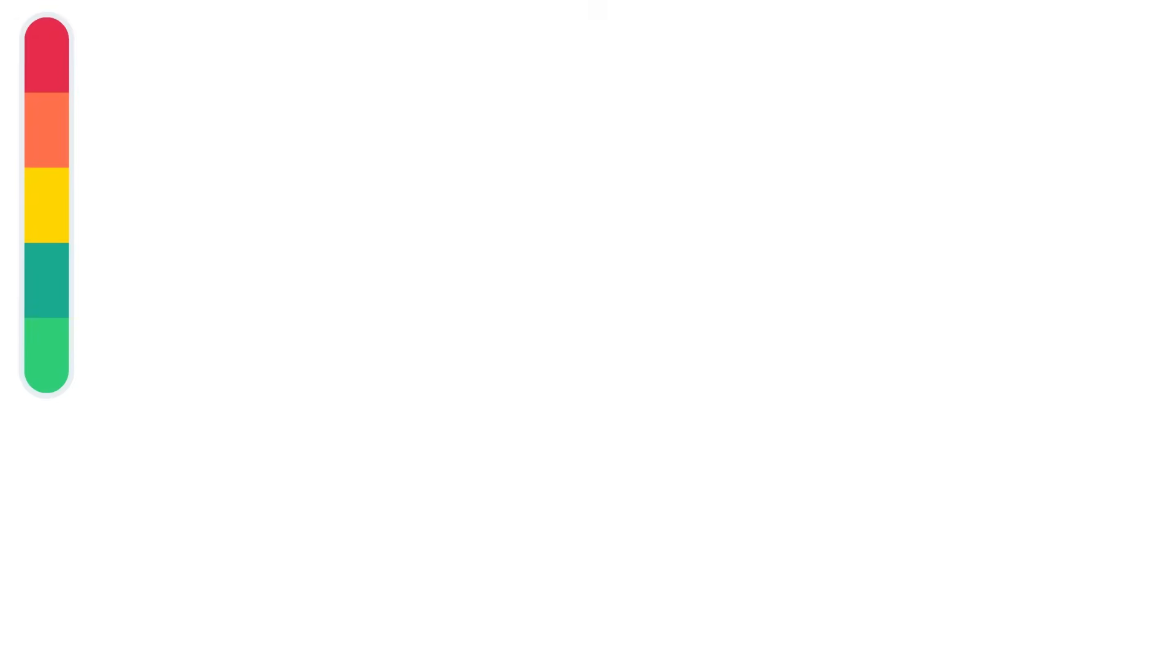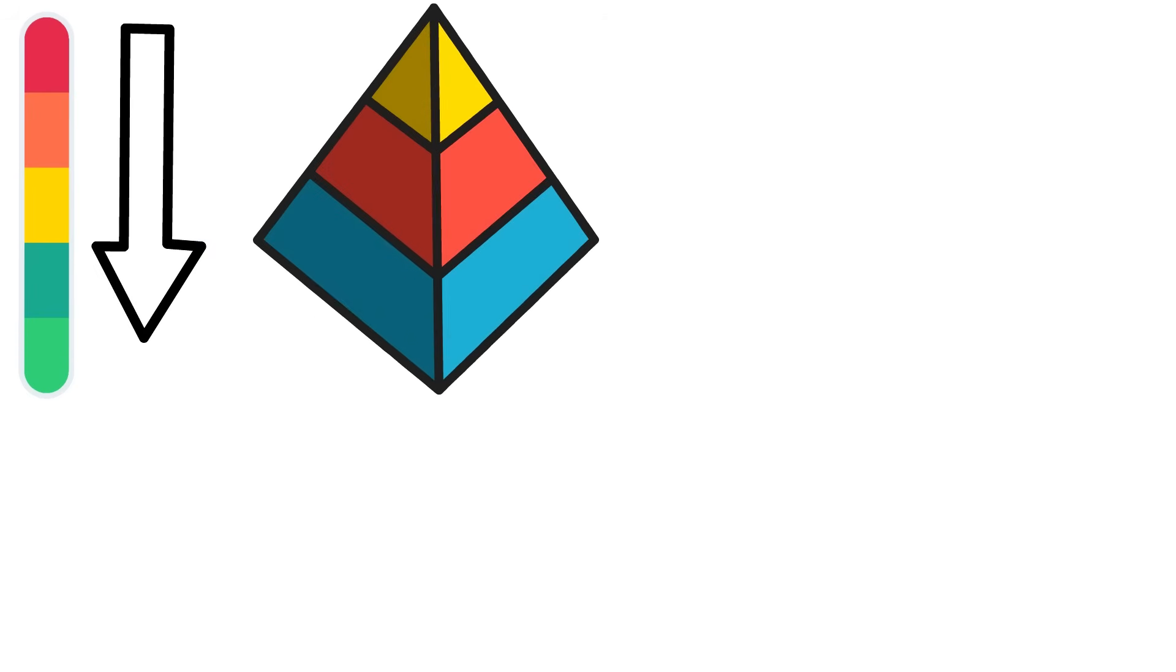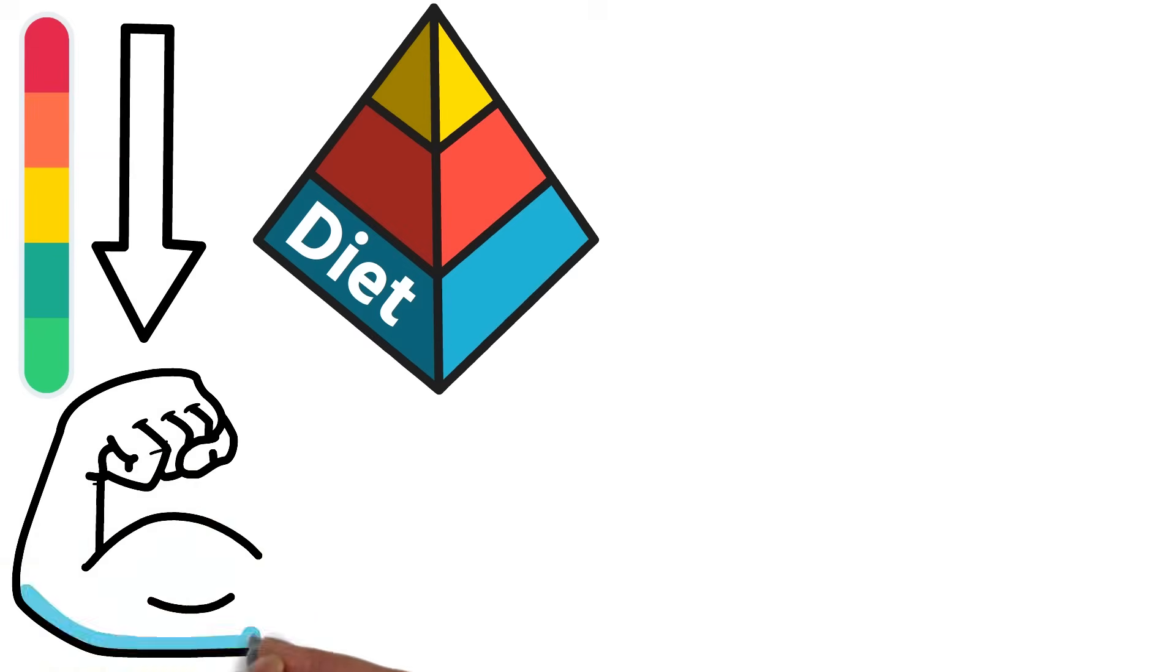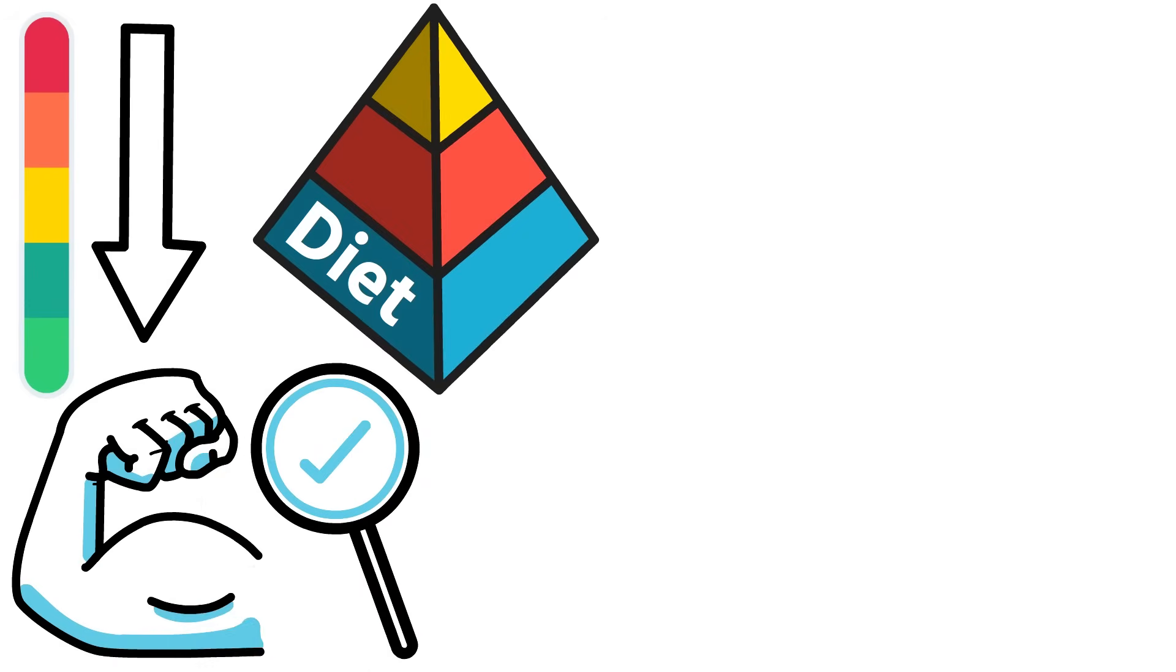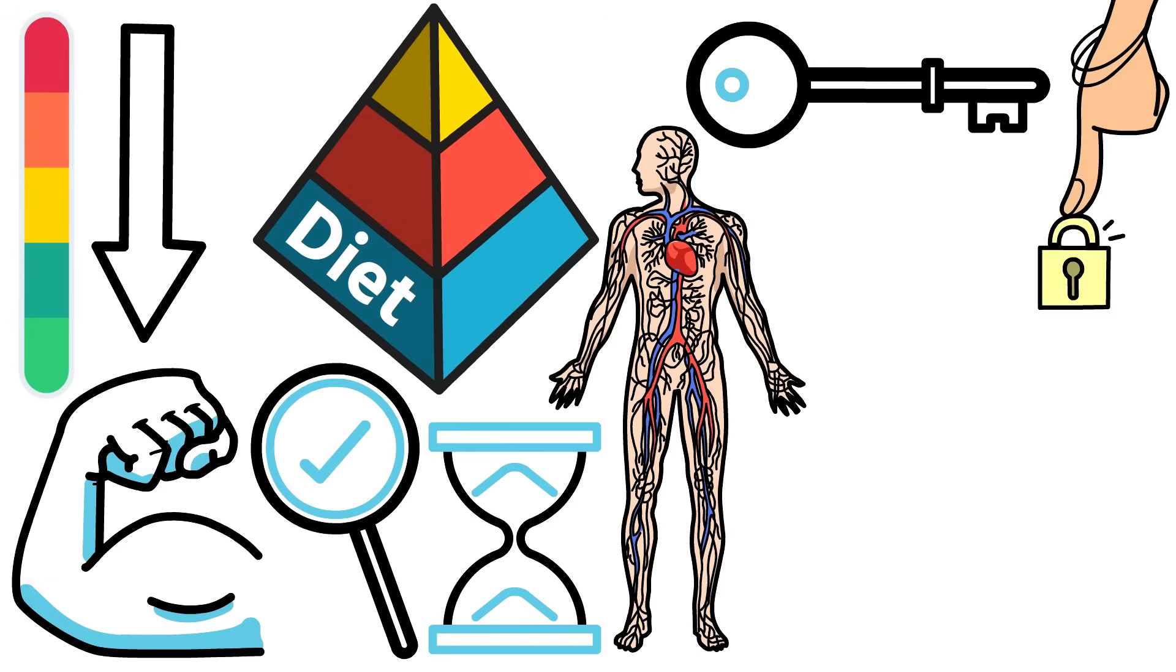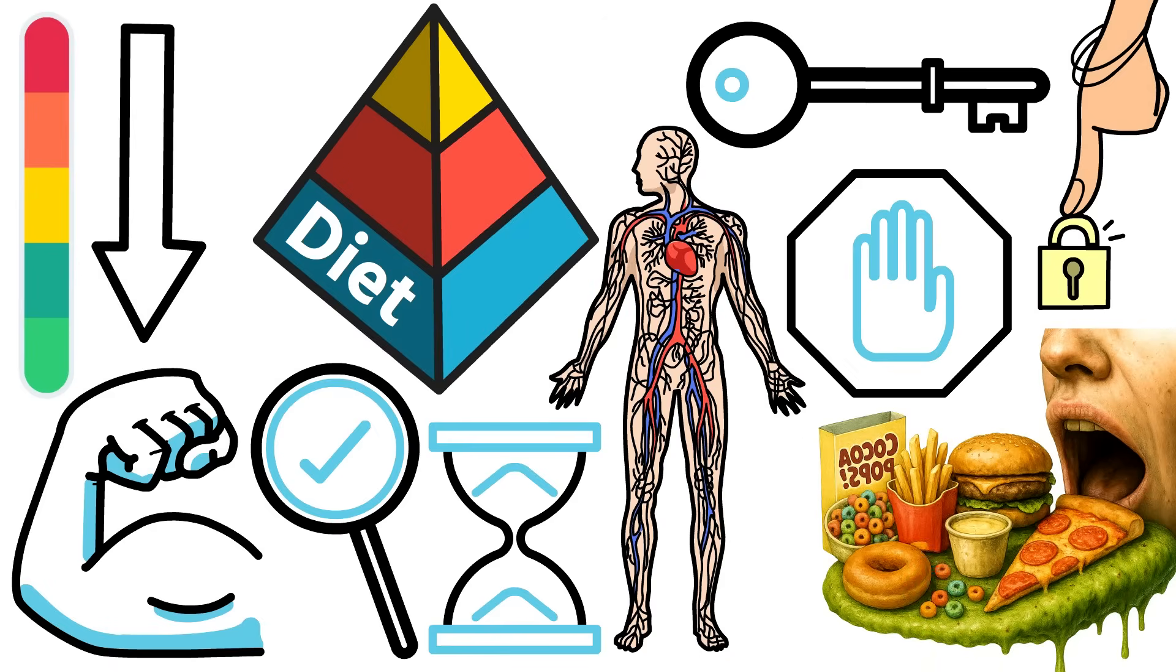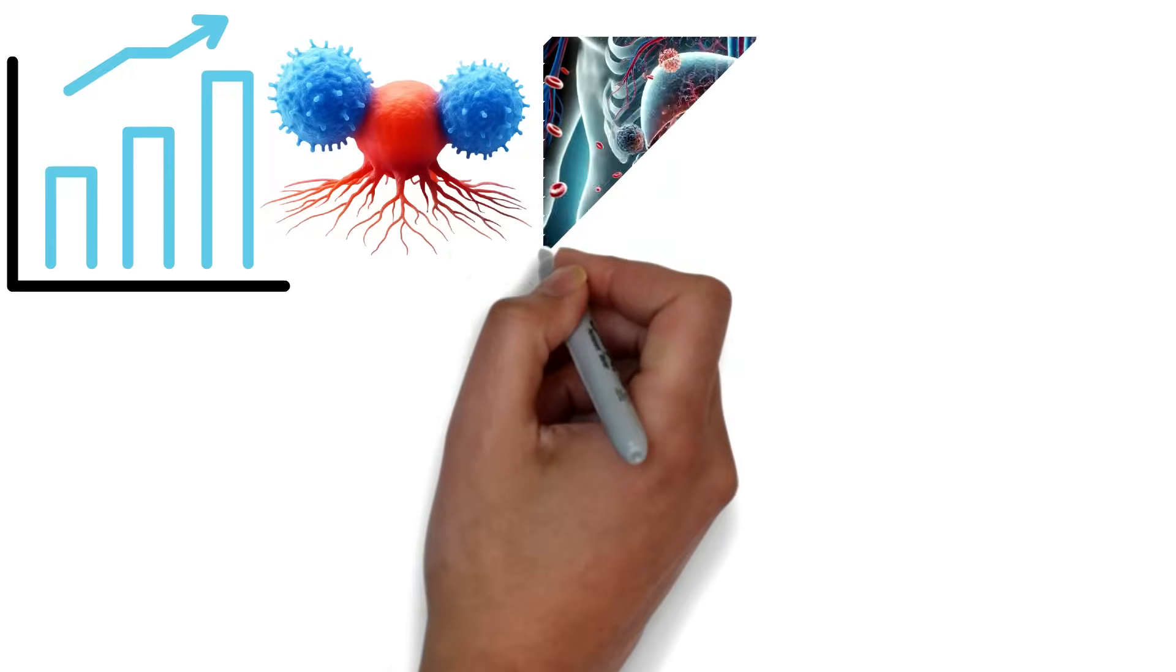To bring your risk of cancer as close to zero as possible, start with the foundation of health, your diet. It's the most powerful metabolic tool you have to take control of your body and extend your lifespan. The principle is simple. Eliminate sugar, sweets, bread, potatoes, and refined carbohydrates. These foods feed cancer cells and fuel metabolic dysfunction.